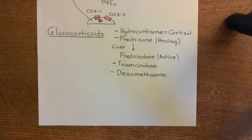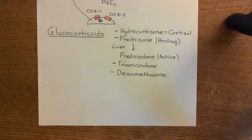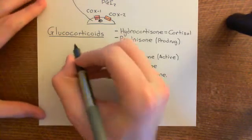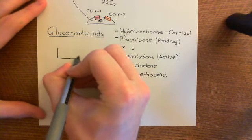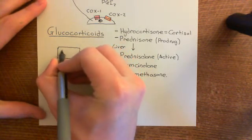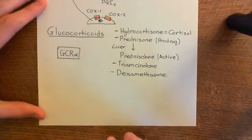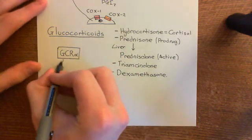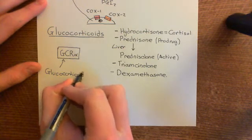So what do these drugs do? Basically, they are going to go into cells and bind to and activate something known as the glucocorticoid receptor alpha, often abbreviated to GCR-alpha. Usually the glucocorticoid receptor alpha is within the cytoplasm of cells, and it also has another protein bound to it called heat shock protein 90, or Hsp90.